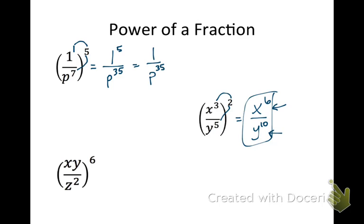For the last problem, we have 3 bases: x, y, and z. The x and y both need implicit exponents of 1. We take the 6 and multiply it by every exponent inside — three exponents total. So we get x to the 6th, y to the 6th, and z to the 12th.